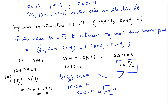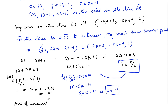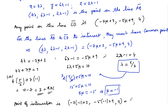Hence, for λ = 5/2 and μ = -1, the two lines intersect. The point of intersection is found by substituting μ = -1 into the point on line CD: (-7×(-1) + 3, -5×(-1) + 9, 4) = (7 + 3, 5 + 9, 4) = (10, 14, 4). The point of intersection is (10, 14, 4).